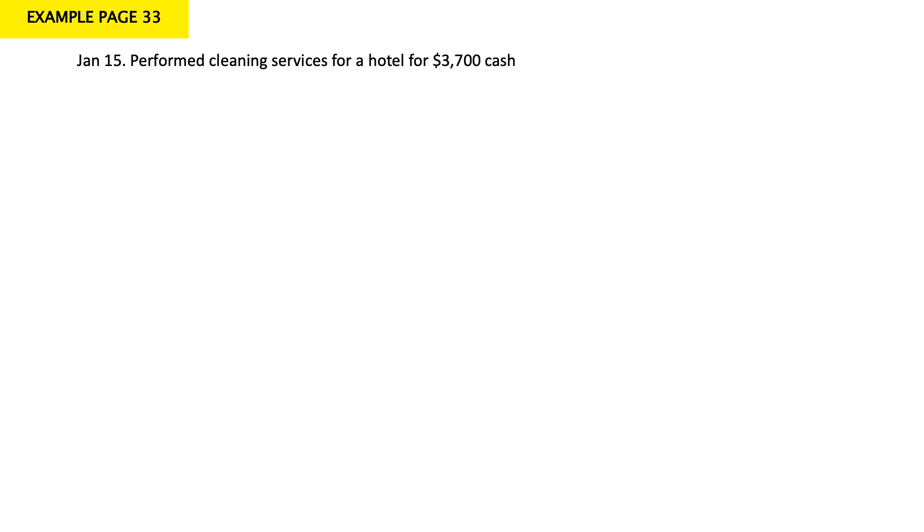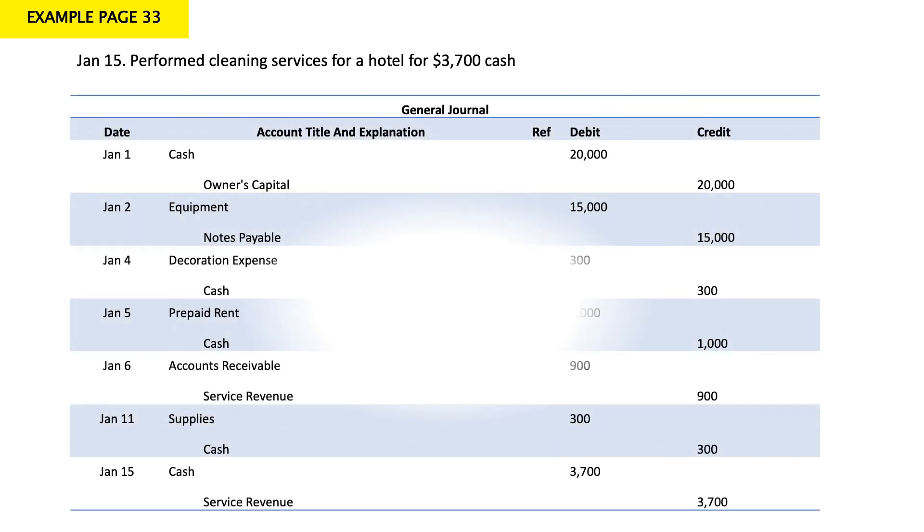January 15: perform cleaning services for a hotel for $3,700 cash. When I perform a service, my revenue increases. Revenue is a credit balance account — it increases in credit and decreases in debit. My cash also increased by $3,700. So: debit cash for $3,700 and credit service revenue for $3,700.